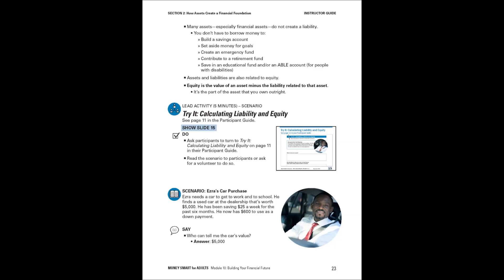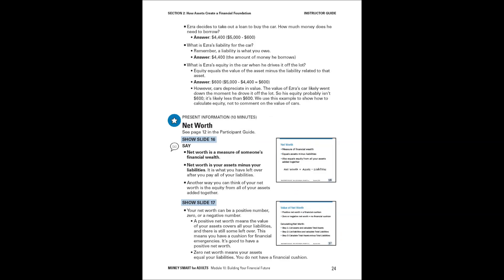Now we get into the try-it activity: calculating liability and equity. You'll use the scenario of Ezra's car purchase to determine his liability and equity based on his down payment and the cost of the car. Read through and use the prompts to ask participants what Ezra's liability is and what his equity is in the car. Note that this example is used to show how to calculate equity — not to comment on the value of cars — so please make that clear if participants ask.